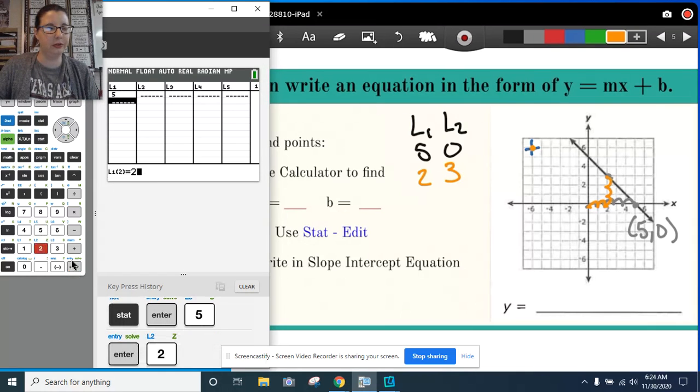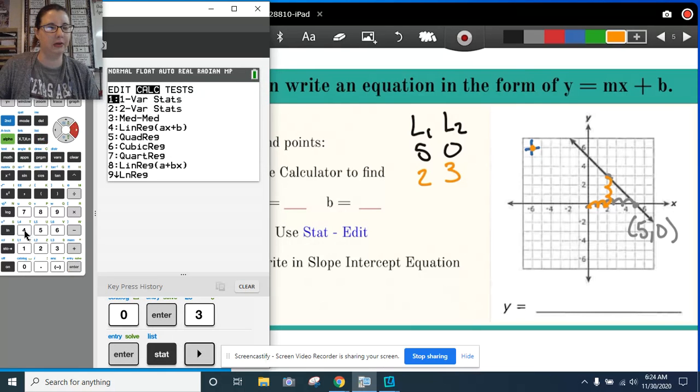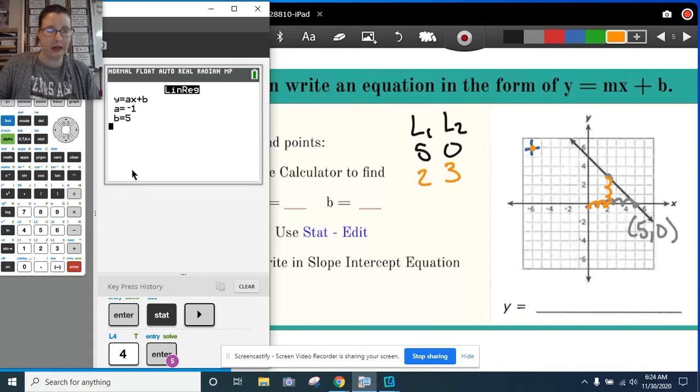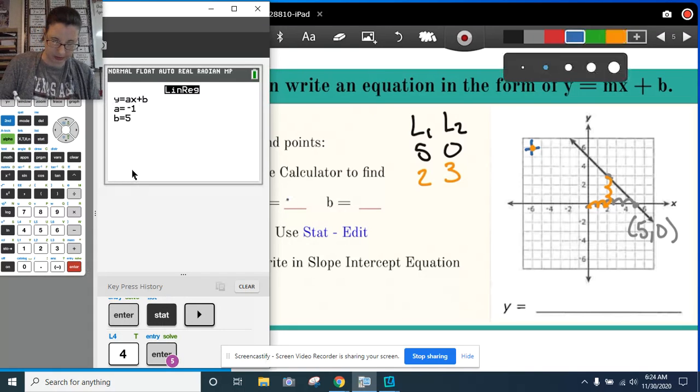5, enter, 2, enter. And over, 0, enter, 3, enter. And now my information here looks like this. Go back to stats, over to calc, number 4.